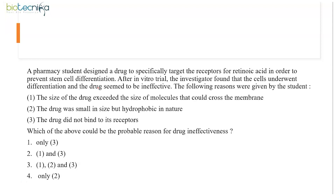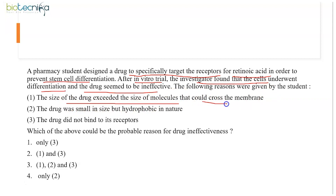You can also get some logical or experimental questions. A pharmacy student designed a drug to specifically target the receptors for retinoic acid in order to prevent stem cell differentiation. After an in vitro trial, the investigator found that the cells underwent differentiation and the drug seemed to be ineffective. The following reasons were given: the size of the drug exceeded the size of molecules that could cross the membrane; the drug was small in size but hydrophobic in nature; the drug did not bind to its receptor. This kind of question does not require specific bookish knowledge — from the question itself you can extract the answer. You have to find the probable reason for drug ineffectiveness.